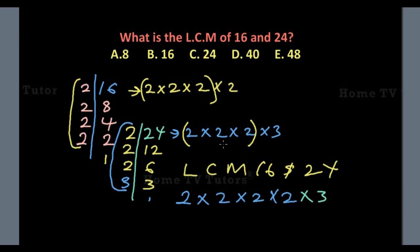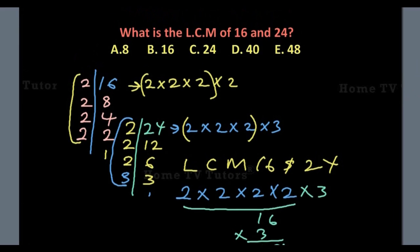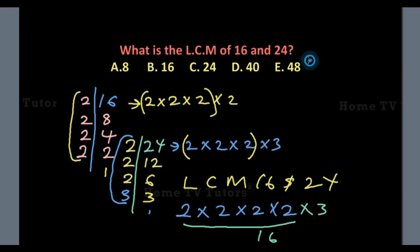The factor 3 is the less common factor. We are looking for the lowest common factor. Now we compute the product: 2 times 2 times 2 times 2 times 3. We already know 2 times 2 times 2 times 2 gives us 16, and 16 times 3 gives us 48. So the LCM of 16 and 24 is 48. The answer option E is the right answer.